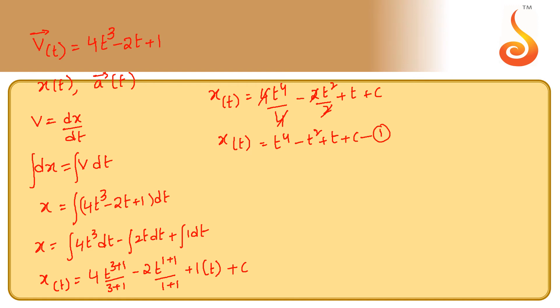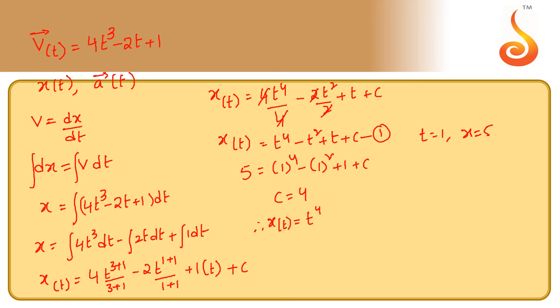We don't know c yet. Since they have said at time t equals 1 second, x equals 5 meters, we substitute these values: 5 equals 1⁴ minus 1² plus 1 plus c. Since 1 minus 1 cancels, we get c equals 4. Therefore, position as a function of time is x(t) = t⁴ minus t² plus t plus 4.